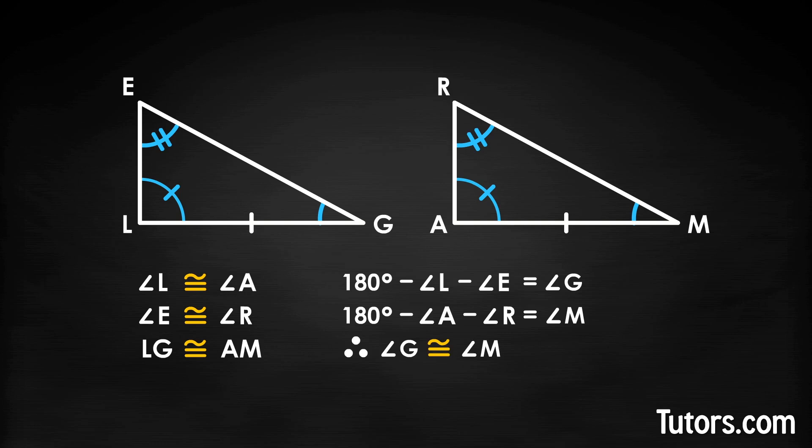Now you can deploy ASA postulate and declare the two triangles congruent.